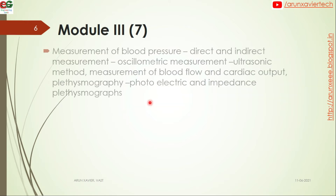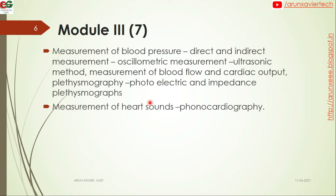Next, we move to Module 3. We discuss the cardiovascular system — specifically the measurement of blood pressure. Methods include the direct method, oscillometric measurements, and the ultrasonic method. We also cover the measurement of blood flow and cardiac output, discussing the photoelectric method and the implants method among others.